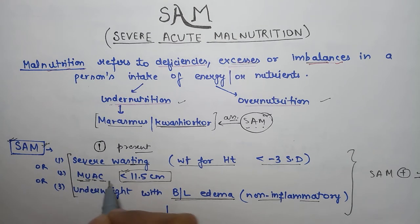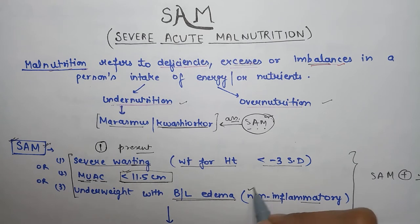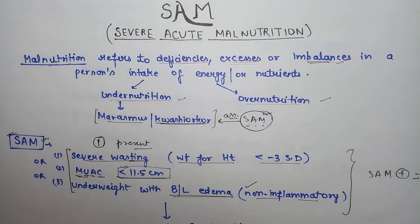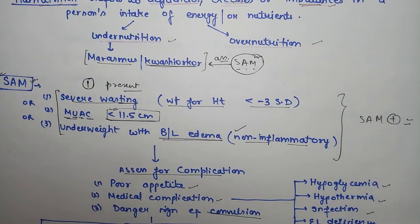Second is mid-upper arm circumference less than 11.5 cm. Third is underweight child with bilateral edema, and the edema should be non-inflammatory. We check this bilateral edema over the dorsum of the foot.